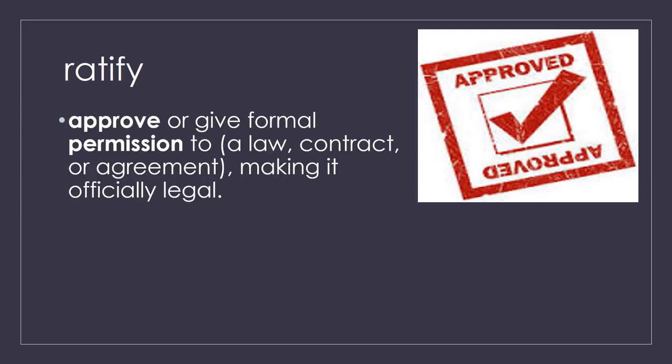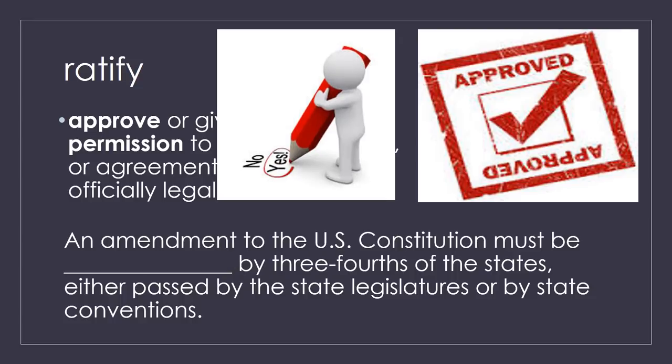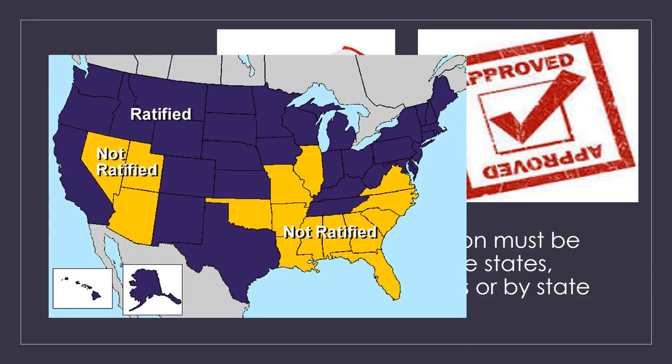The next word is ratify. That means to approve or give formal permission to a law, contract, or agreement, making it officially legal. An amendment to the U.S. Constitution must be ratified by three-fourths of the states, either passed by the state legislatures or by state conventions. Here is a map showing which states ratified an amendment — the states in purple approved it, the states in yellow did not ratify, meaning they did not approve it.